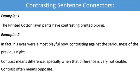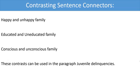Such contrasting sentences must be included in your paragraph. Here are some contrasting sentence connectors you can use while writing the paragraph on juvenile delinquency: happy and unhappy family, educated and uneducated family, conscious and unconscious families. These contrasting sentence connectors can be used in the paragraph on juvenile delinquency.